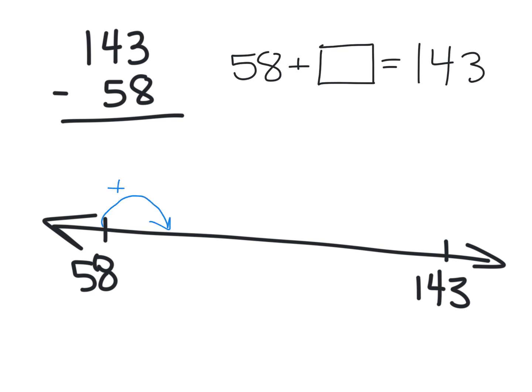For example, I can do a hop of two, and where is that going to put me? That's going to put me at 60, because that's a nice benchmark number. Now from 60, I could do any number of hops, but I'm going to do a hop to kind of speed this along. So my next hop is going to be a 40, and that's going to put me at 100.